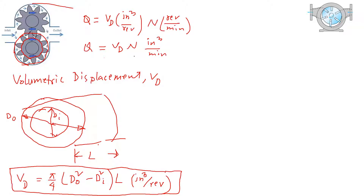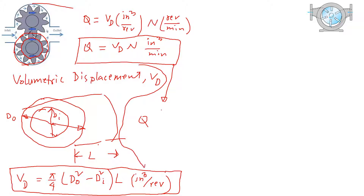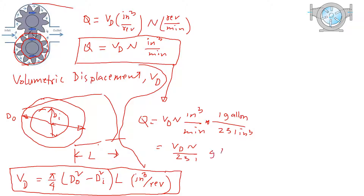If we want the flow rate in gallons per minute, we simply convert. Q equals Vd times N in inch cubed per minute. We know that one gallon is 231 inch cubed, so this becomes Q = (Vd × N) / 231 gallons per minute. That is the theoretical flow rate, when Vd is in inch cubed per revolution and N is in RPM.